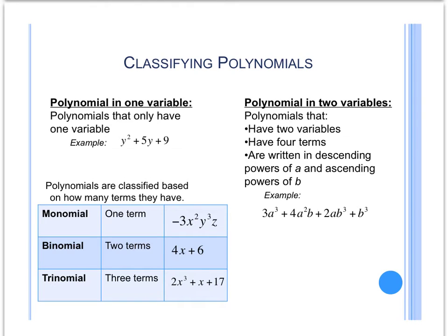There are different ways to classify polynomials. You can classify polynomials in one variable or classify a polynomial in two variables. If you classify it in one variable, that means the polynomial only has one variable throughout it. In that example, y is the one variable. However, looking over at the two variables, notice in this example we have a's and b's throughout the polynomial.